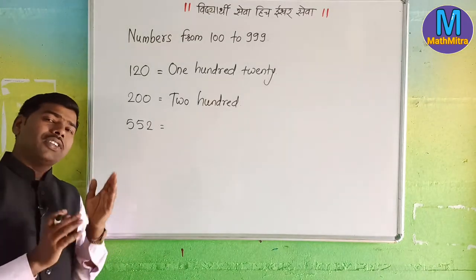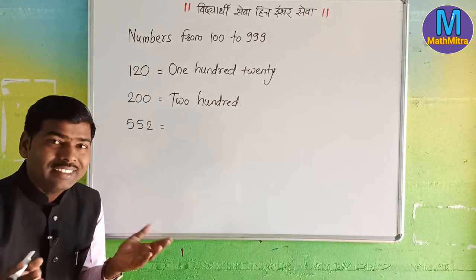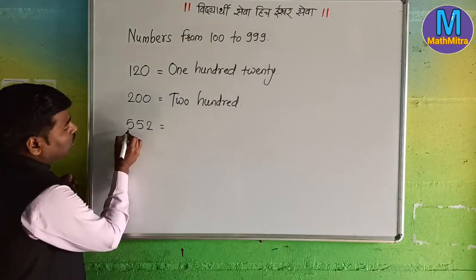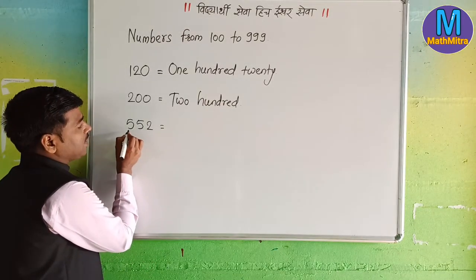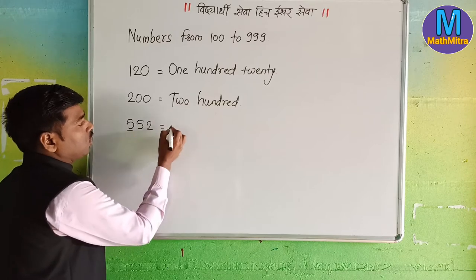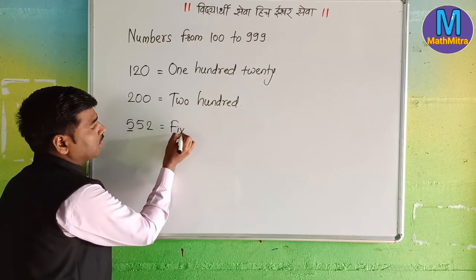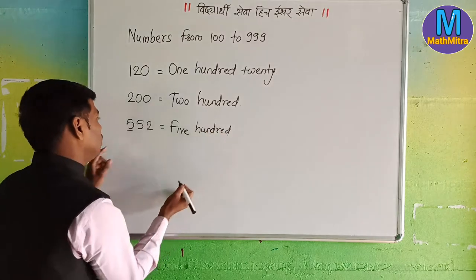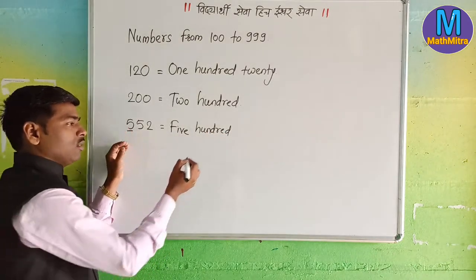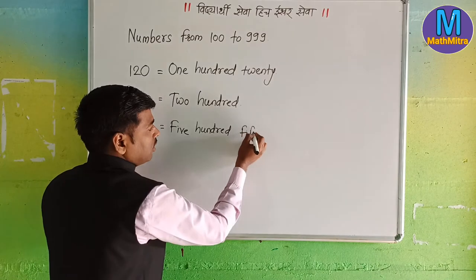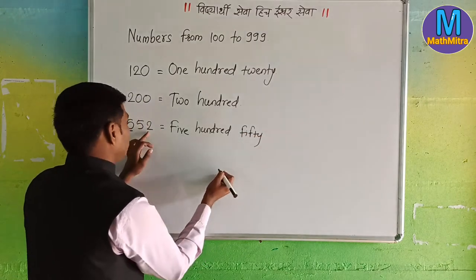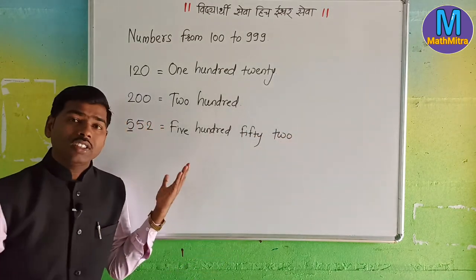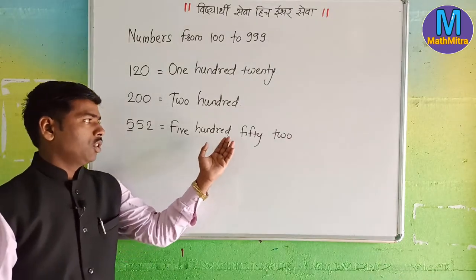How you can write in number name? This is 1, 10, 100. How much is 100? 500. Then this is the second tens, means 50. And the last one is 2.